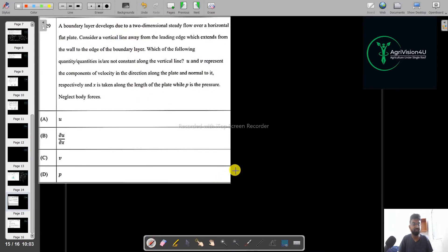Let us move to the next question. A boundary layer develops due to two-dimensional steady flow over a horizontal flat plate. Consider the vertical line away from the leading edge which extends from the wall to the edge of the boundary layer. Which of the following quantities are not constant along the vertical line?